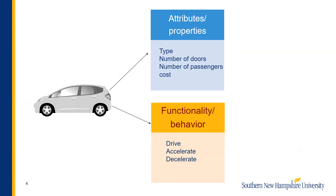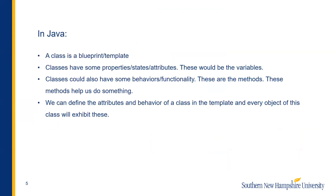Let's consider a car. It has some attributes like the type, the number of doors, number of passengers, and the cost of the car. It could have some functionality or exhibit some behavior like drive, accelerate, or decelerate. In Java, a class is a blueprint or a template. Classes have some properties or states or attributes — these would be the variables. The class could also have some behavior or functionality — these are the methods in the class. We can define the attributes and behavior of a class in a template and every object of this class will exhibit these.